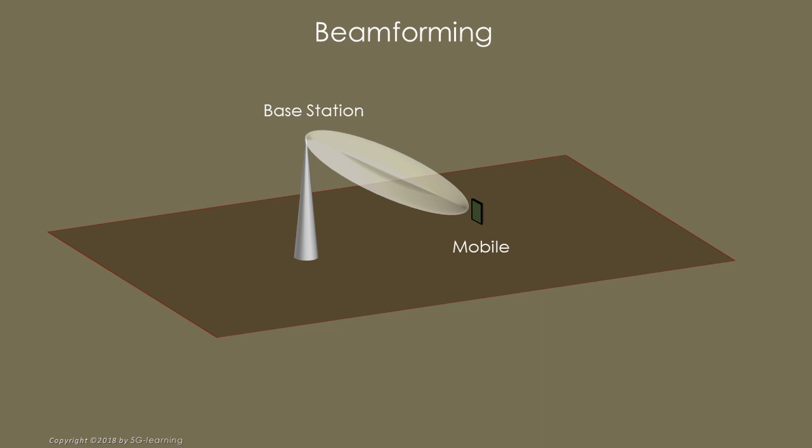This technology is called Beamforming. From the base station perspective, beamforming may be used to concentrate its transmitter energy in the direction of the mobile receiver. In this case, we talk about transmission beamforming. Beamforming also allows to focus the receiver antenna in the direction the mobile is transmitting from. In this case, we say that the base station makes use of reception beamforming.